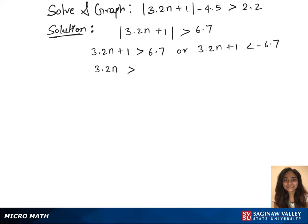For the first inequality, 3.2n is greater than 5.7. Now divide by 3.2 on both sides, which will give us n greater than 57 over 32.